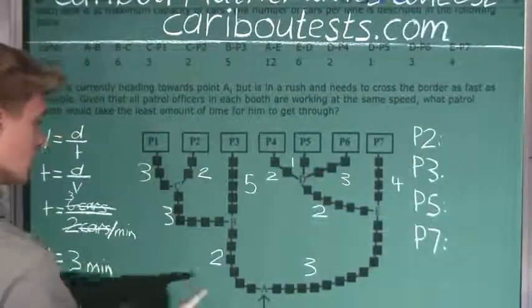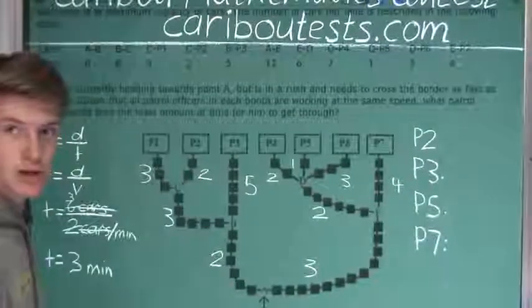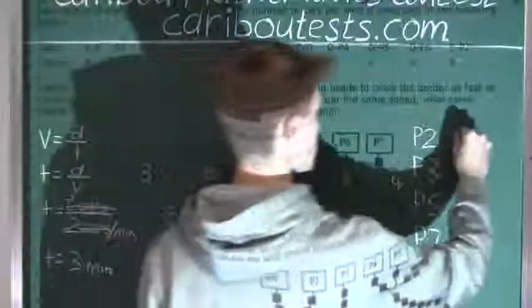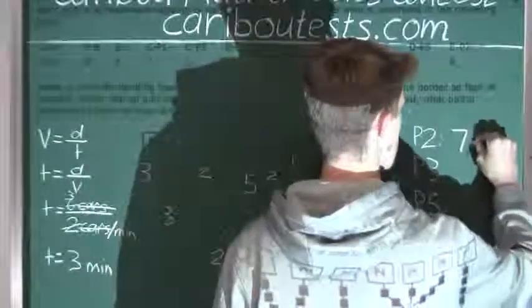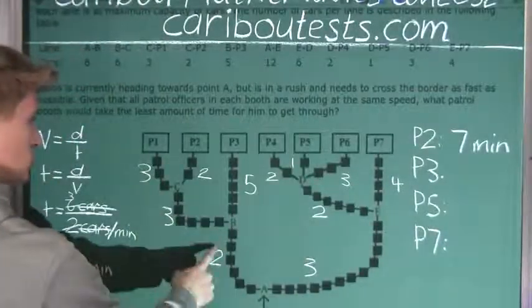So for P2, it takes two plus three is five minutes plus two minutes is seven minutes. For P3, it takes two plus five is, again, seven minutes.